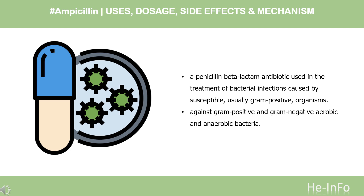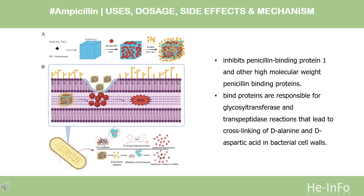Ampicillin is stable against hydrolysis by a variety of beta-lactamases, including penicillinases, cephalosporinases, and extended-spectrum beta-lactamases. By binding to specific penicillin-binding proteins (PBPs) located inside the bacterial cell wall, ampicillin inhibits the third and last stage of bacterial cell wall synthesis. Cell lysis is then mediated by bacterial cell wall autolytic enzymes such as autolysins. It is possible that ampicillin interferes with an autolycin inhibitor.